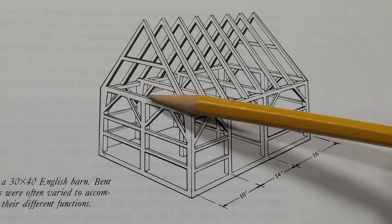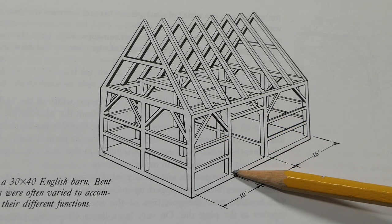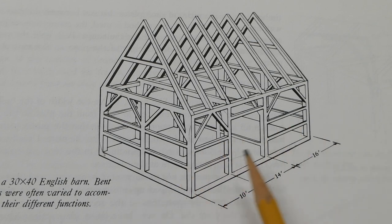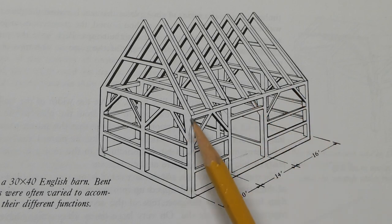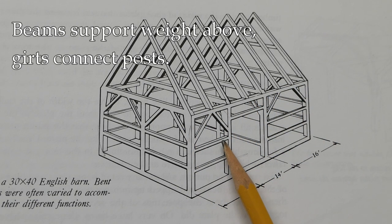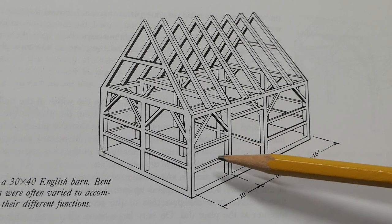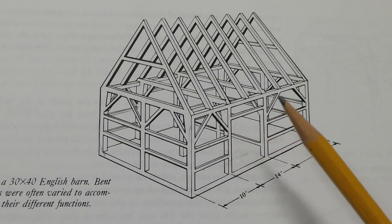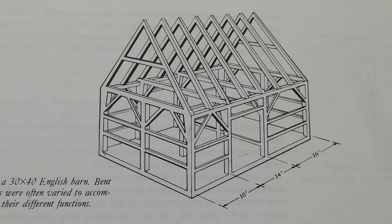The way it's all put together is you have bents, which are assembled as a unit and then tilted up. In between each bent there are horizontal members that hold everything together. So everything is a structural member — the rafters sit on a top plate that's also a beam. You'll also have 45-degree angle braces that keep the whole structure from racking. All of these are important components, and if you take out any one piece of it, you compromise the structure.